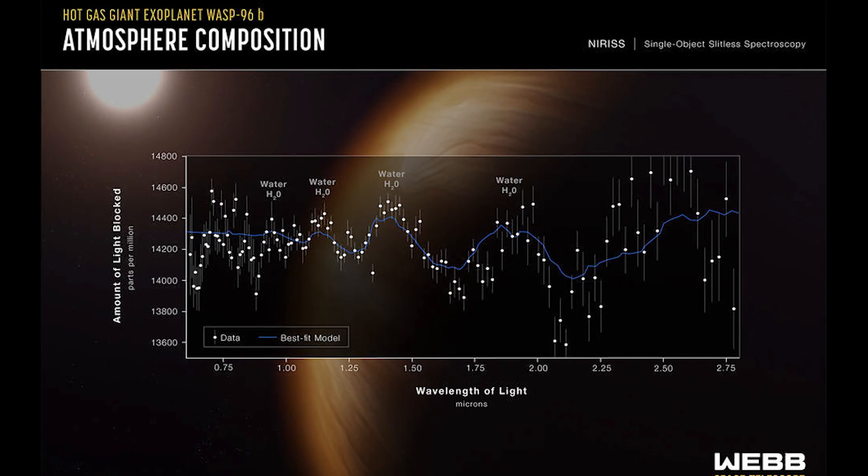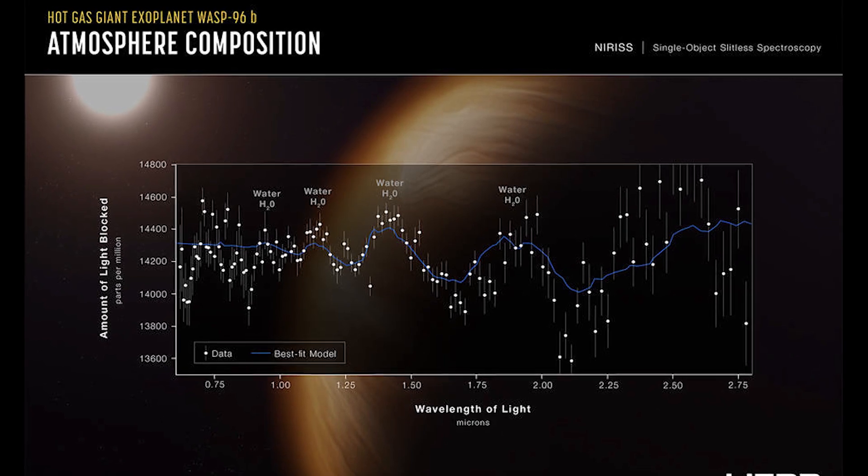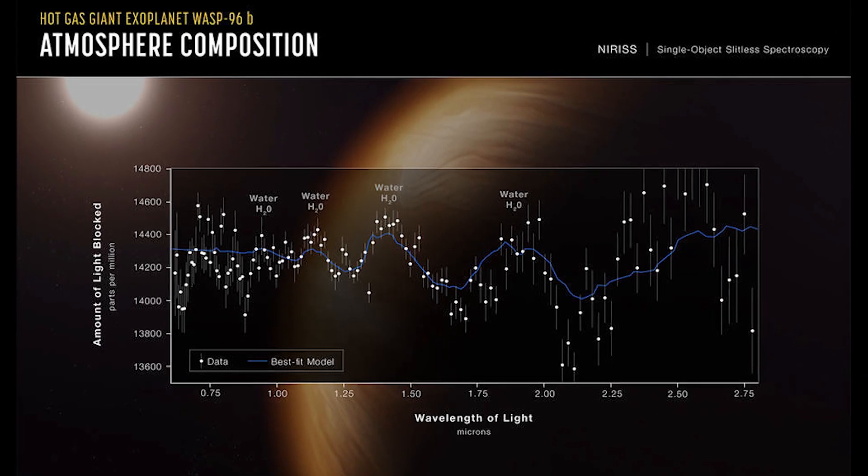The image of the massive, very hot exoplanet WASP-96b, taken by the JWST, reveals water vapor in its atmosphere.